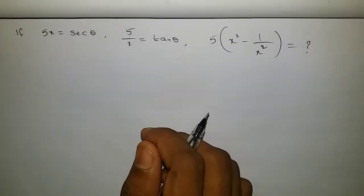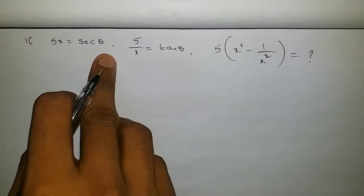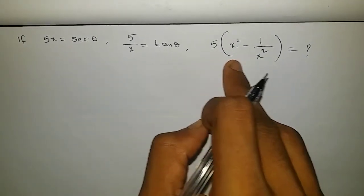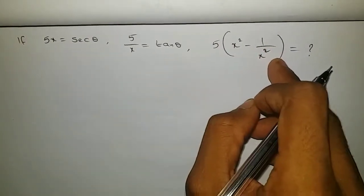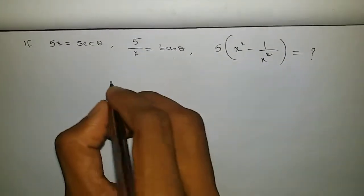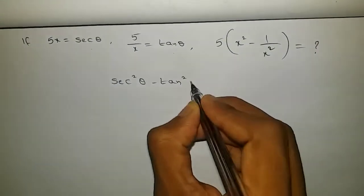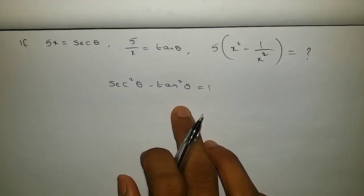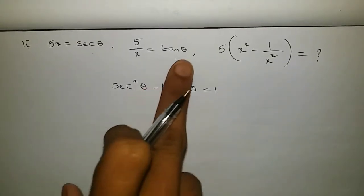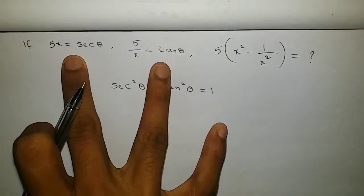Hello everyone, today we are going to learn one problem from the topic trigonometry. If f(x) equals secant theta and f(1/x) equals tan theta, then what is the value of f times x squared minus 1 by x squared? Related to secant and tan, we know an identity: secant squared theta minus tan squared theta equals 1. Here secant is there, here secant squared is there, here tan is there, here tan squared is there.